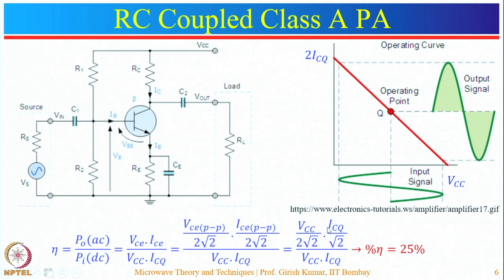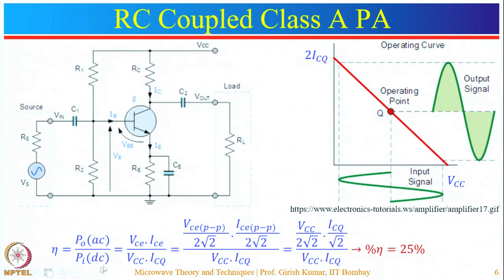The power supplied by the battery is V_CC · I_CQ, assuming the biasing resistor current is negligible. The conversion efficiency is the ratio of output power to supply power. Substituting these values gives an efficiency of 25 percent. So for a 10 watt power amplifier designed with class A RC-coupled configuration, one has to supply 40 watts — a lot of power is wasted.